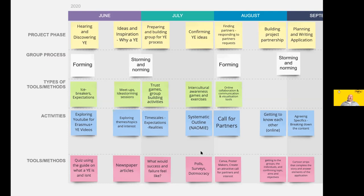Confirming the young people's ideas and interests: what is it they really want? For example, one group was around living skills for disadvantaged young people facing homelessness; another was about young women's portrayal in social media; another about music as a learning opportunity. Tools like polls, surveys, and an app called Demorcracy help you find out and engage with the young people's interests and confirm their ideas.